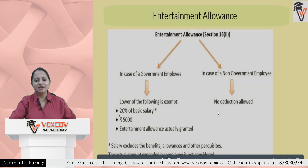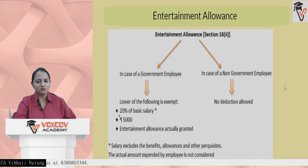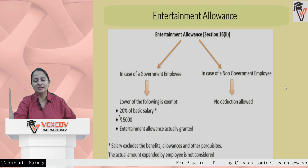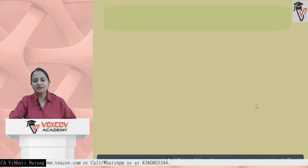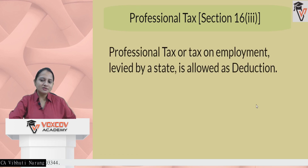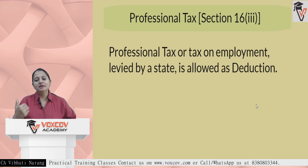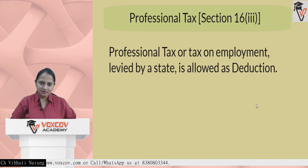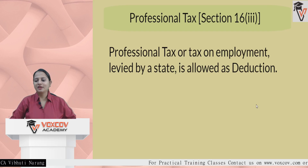The second deduction under Section 16 is entertainment allowance, available only to government employees. For non-government employees, entertainment allowance is fully taxable with no deduction. For government employees, the deduction is the lower of: 20% of basic salary, Rs. 5,000, or the allowance actually received. The third deduction is professional tax — a tax on employment levied by state governments. Whatever professional tax is paid is available as a deduction under Section 16(3).